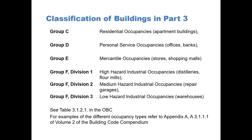Group F, Division I, is High Hazard Industrial Occupancies, such as distilleries and flour mills. Group F, Division II, is Medium Hazard Industrial Occupancies — repair garages. And finally, Group F, Division III, is Low Hazard Industrial Occupancies — such as warehouses.